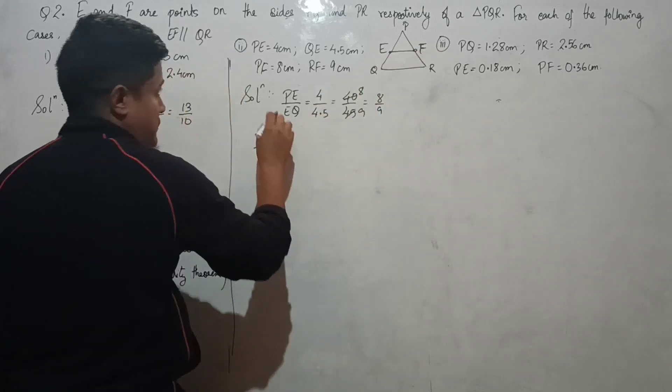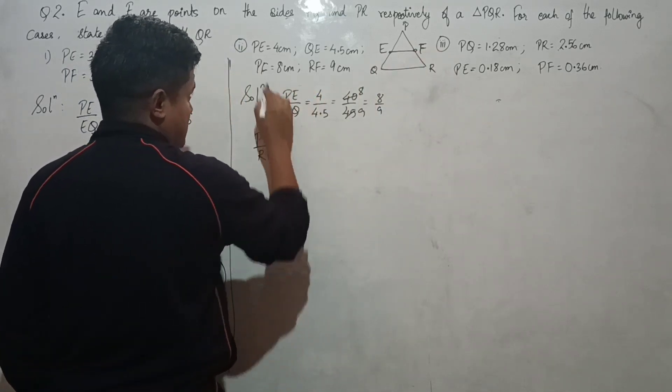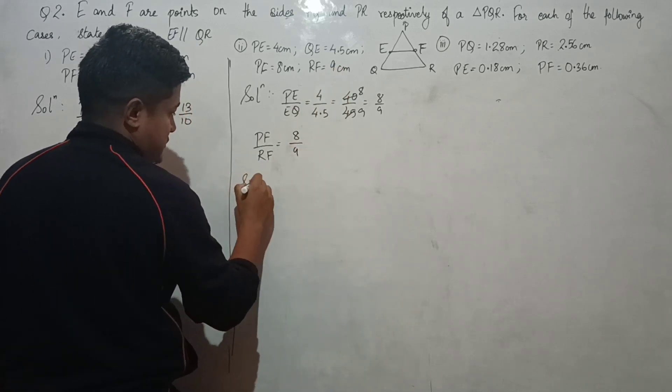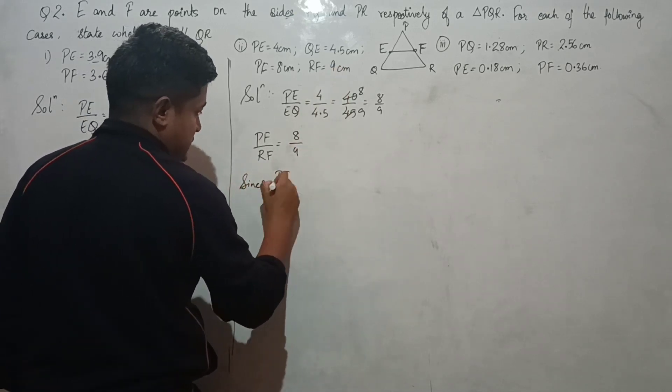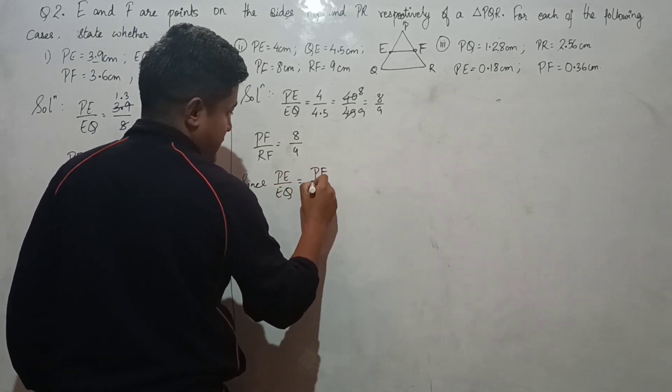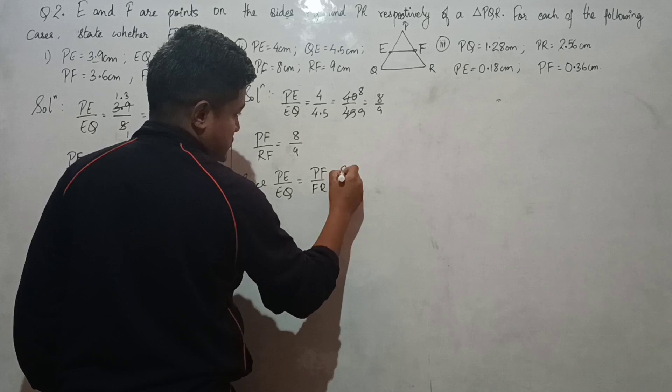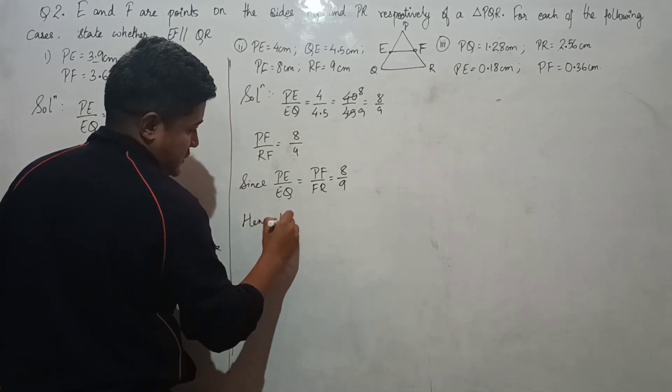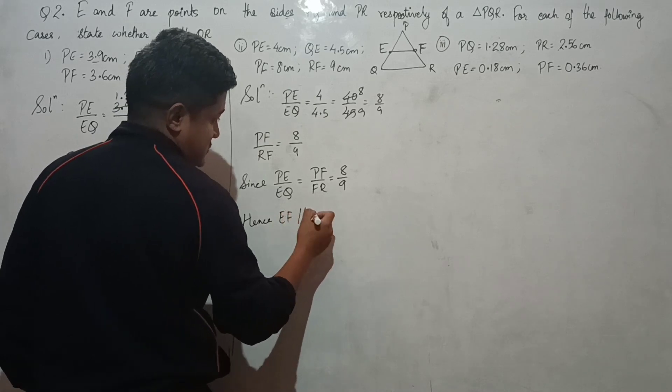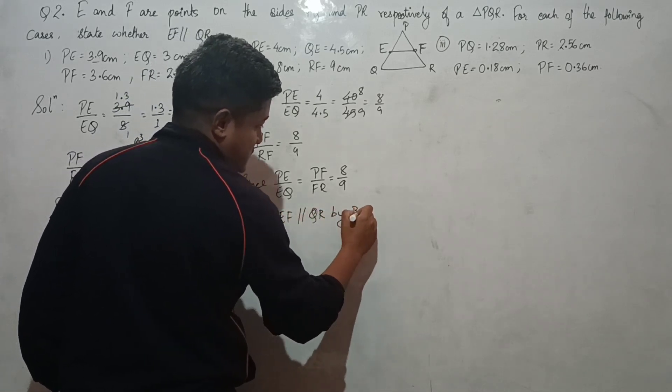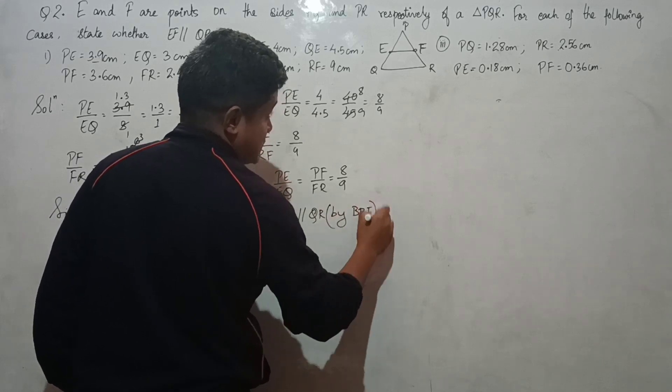PF/FR: PF is 8 and RF is 9. Since PE/EQ equals PF/FR = 8/9, hence EF is parallel to QR by the Basic Proportionality Theorem.